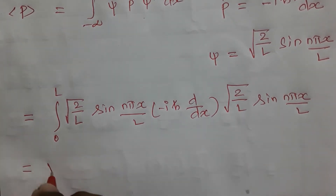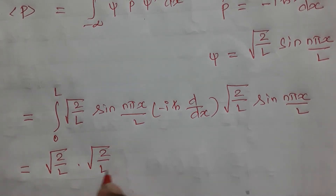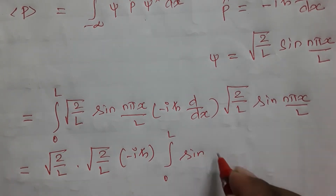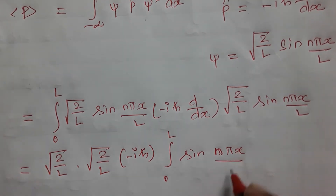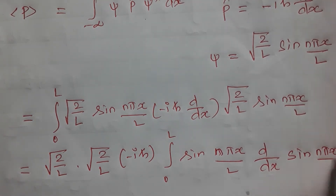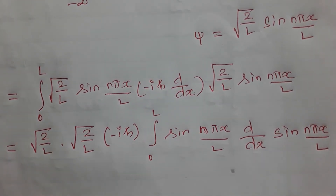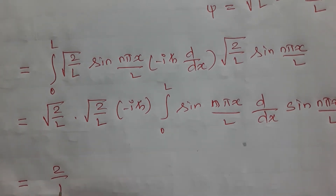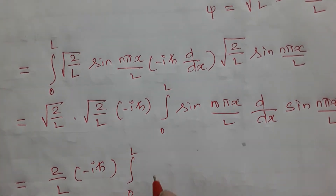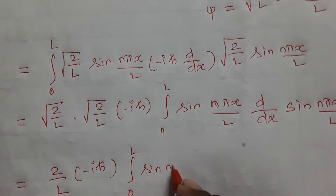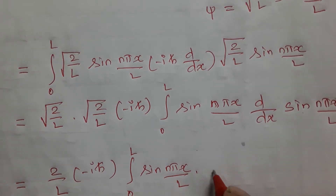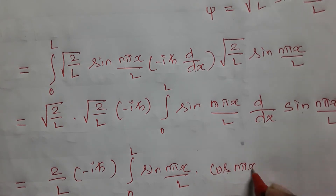Next, substituting: limits of 0 to L, square root of 2 by L into square root of 2 by L, taking minus i h-cross outside, gives the integral from 0 to L of sin(n pi x by L) times d by dx of sin(n pi x by L) dx.